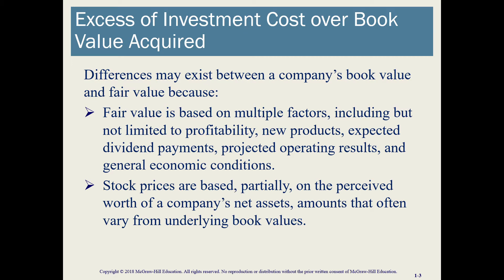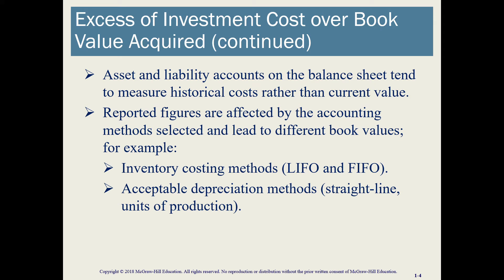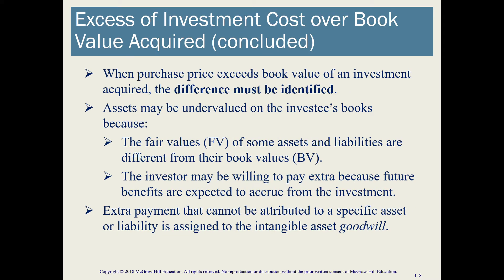What happens if there are differences between our value and the book value of the company? There might be differences between the fair market value of the company's net assets and the values reported on the balance sheet, mainly because of the historical cost principle. Some assets and liabilities are reported at cost while others are reported at fair value, so they may not match the fair value of net assets in totality. We also use estimates in accounting — for inventory costing methods, depreciation, the allowance for doubtful accounts — and these affect the differences between fair value and net book value.